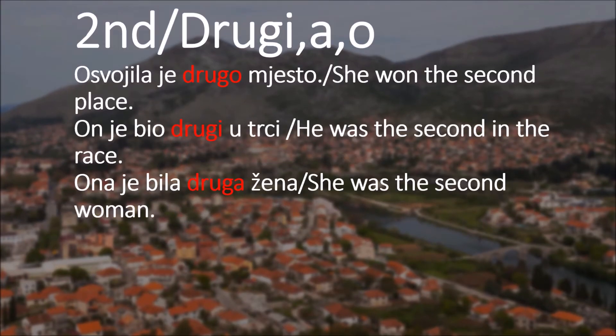Second: drugi, druga, drugo. Drugi is when we're talking about a masculine noun, druga is feminine, and drugo is neuter. Example: osvojila je drugo mjesto - she won the second place. Again, mjesto is neuter, so we're using drugo.